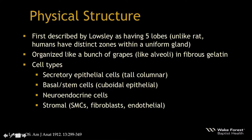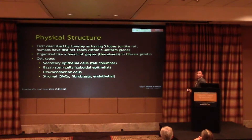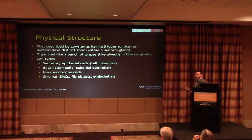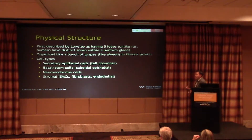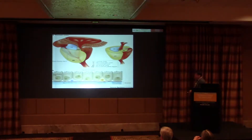Regarding prostate anatomy, Lousley — as in the famous Lousley retractor — initially described the prostate as having five lobes. However, unlike in the rat, humans have distinct zones within a relatively uniform gland, organized like a bunch of grapes or like alveoli suspended in fibrous gelatin. There are a variety of cell types: secretory epithelial cells with tall columnar epithelium releasing many proteins, basal and stem cells at the base, neuroendocrine cells, and stromal cells including smooth muscle cells, fibroblasts, and endothelial cells.